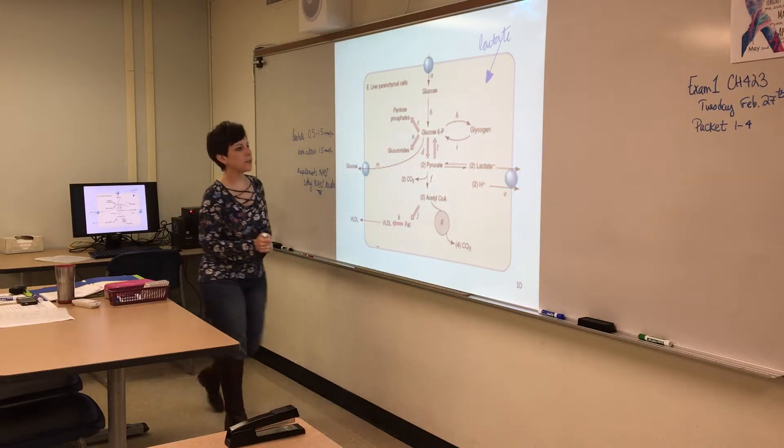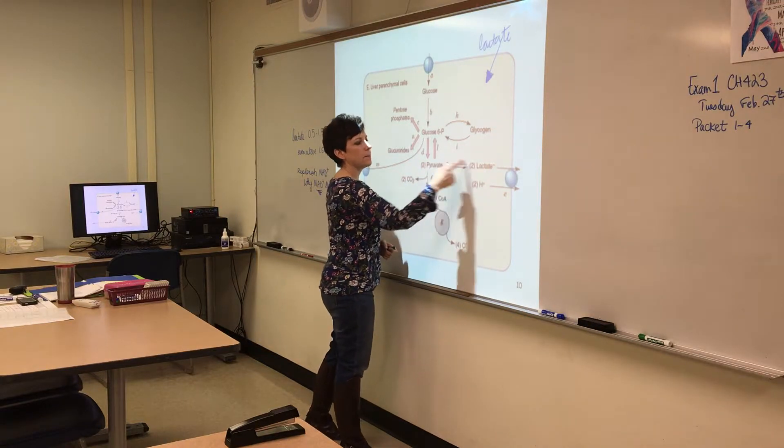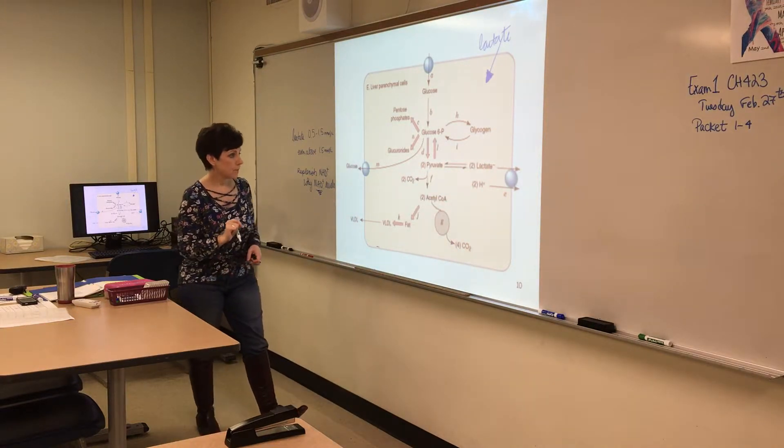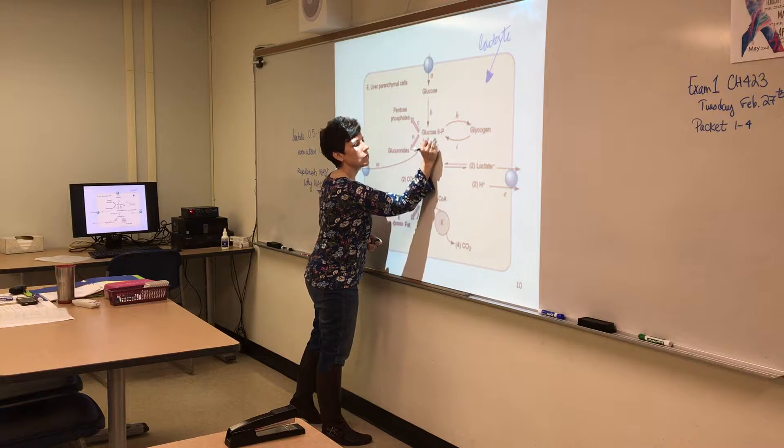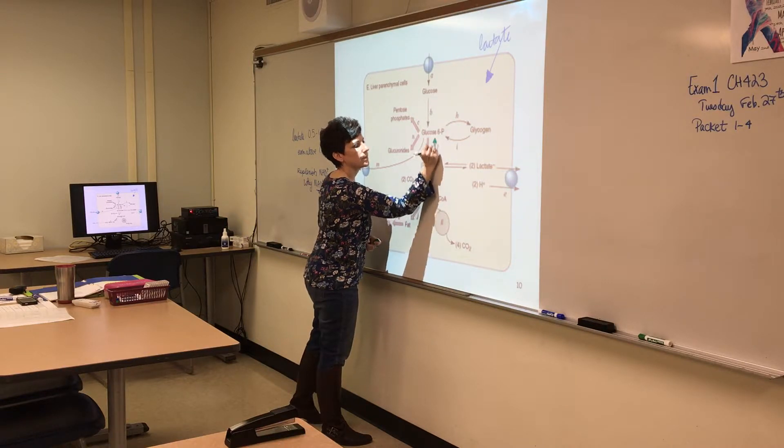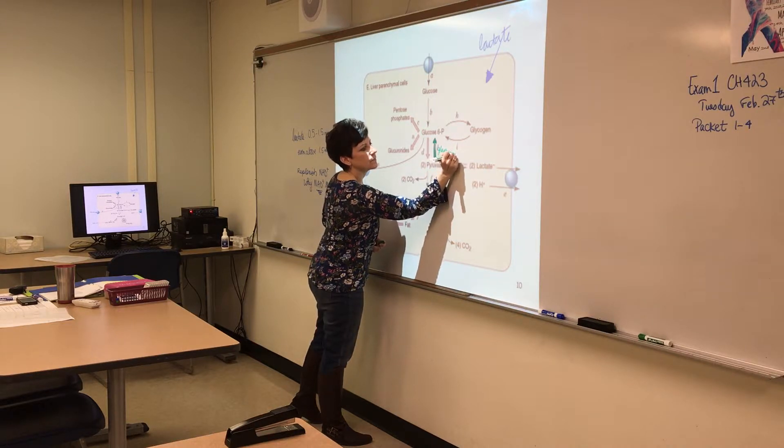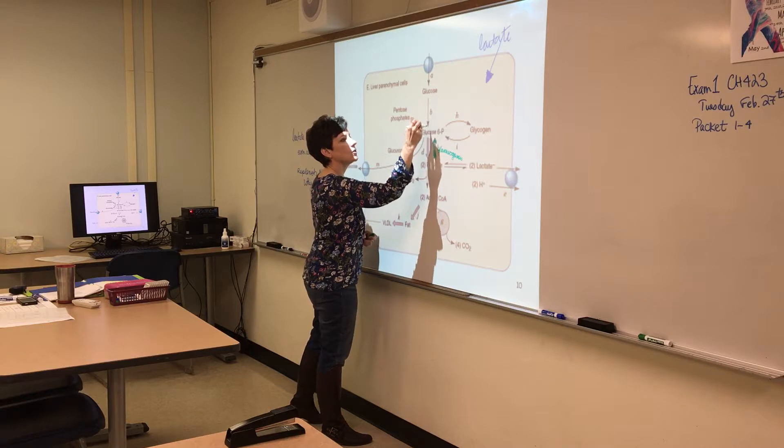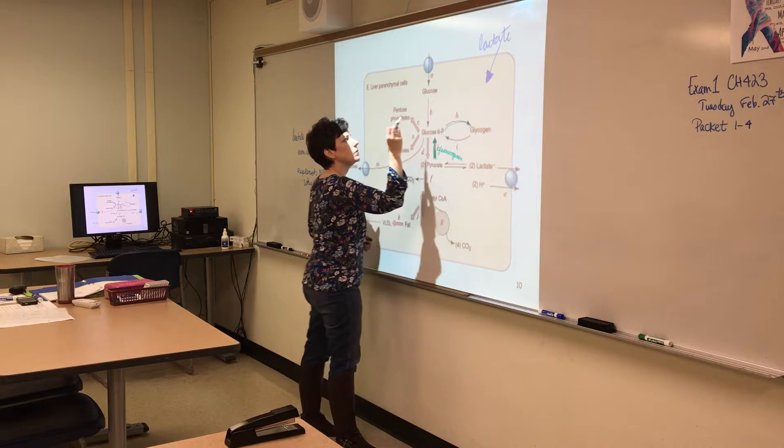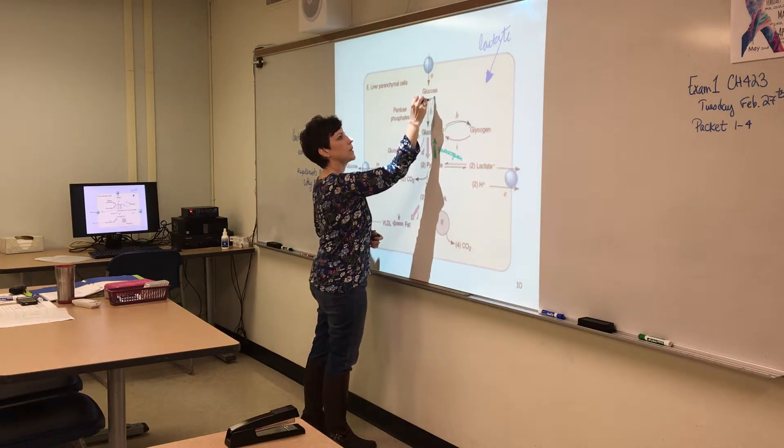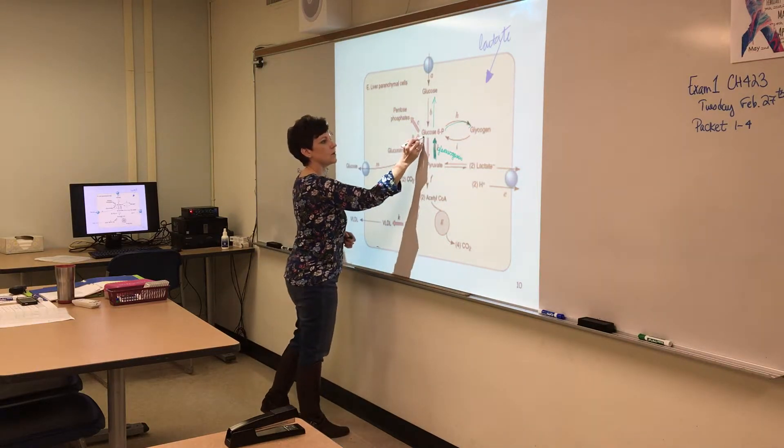We can do lactate-pyruvate back and forth if we need to. We can synthesize glucose using that route—that's our gluconeogenesis route. Synthesize our glucose 6-phosphate, we can synthesize glycogen if we need to, synthesize glucose and then export our glucose. Oh wait, it went off that way—so glucose 6-phosphate.